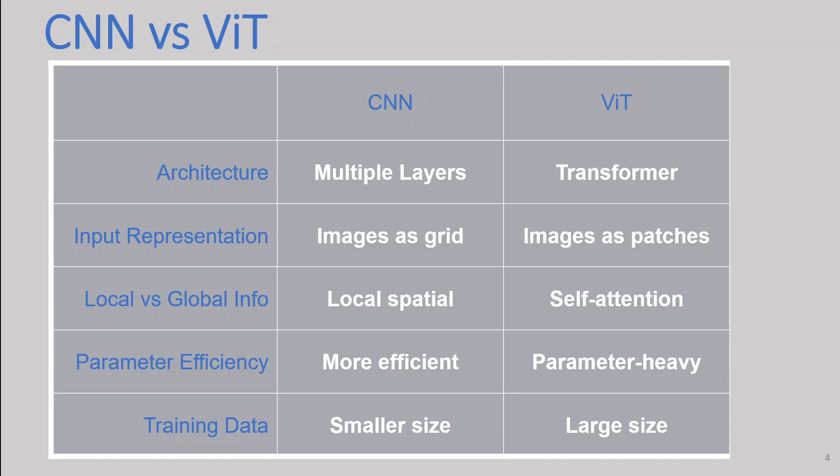Then we have training data size. CNNs perform well on smaller datasets as they can learn local patterns and features efficiently, and are widely used in computer vision tasks even with limited amounts of data. ViTs often require large amounts of training data to generalize well due to their reliance on global context, and they tend to excel when trained on large datasets.